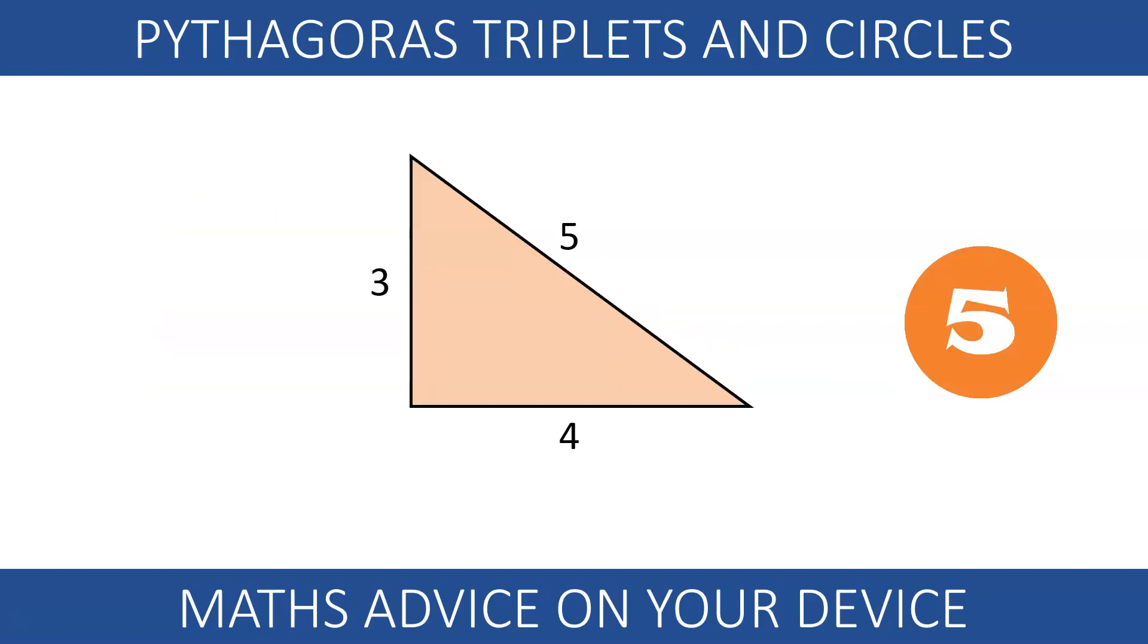Here we have the simplest triplet. The circle touches the sides of the triangle 3x4x5. Can you estimate the size of the radius? Stop the video here and make a guess.